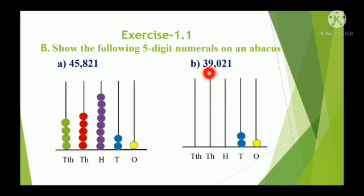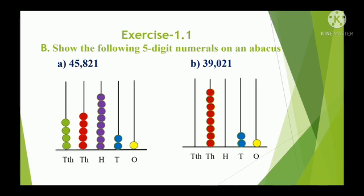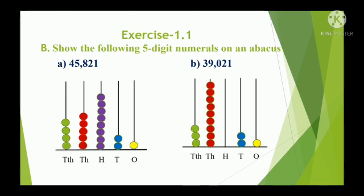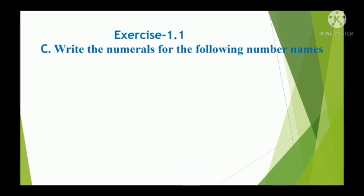In the 1,000s place, the digit is 9, so draw 9 beads: 1, 2, 3, 4, 5, 6, 7, 8, 9. In the 10,000s place, the digit is 3, so draw 3 beads: 1, 2, 3. Exercise 1.1c.